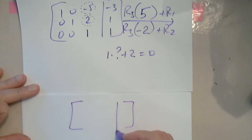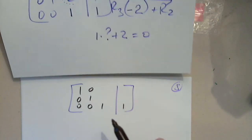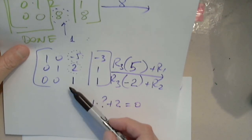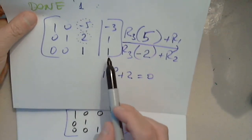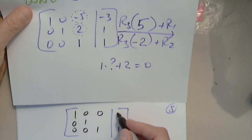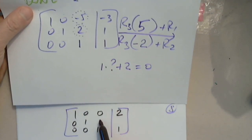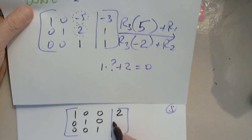And of course we have to go back and check. Don't trust this — it's so easy to make a mistake in anything, especially this method. So I copy everything except these two. 1 times 5 minus 5. 1 times 5 minus 3: 2. 1 times negative 2 plus 2. 1 times negative 2 plus 1.